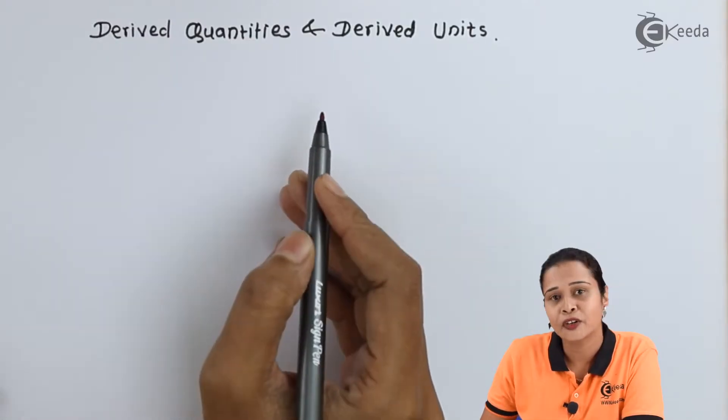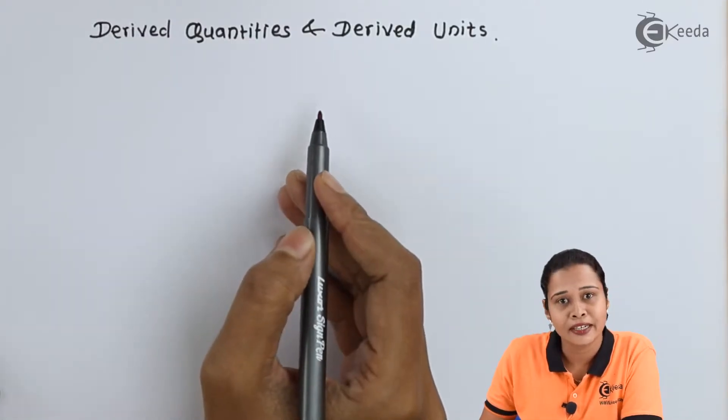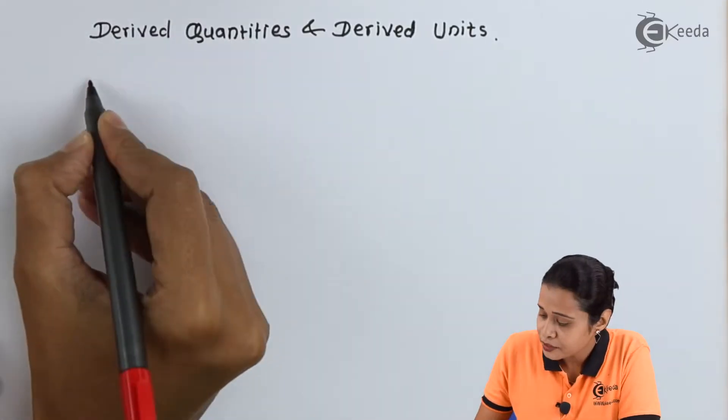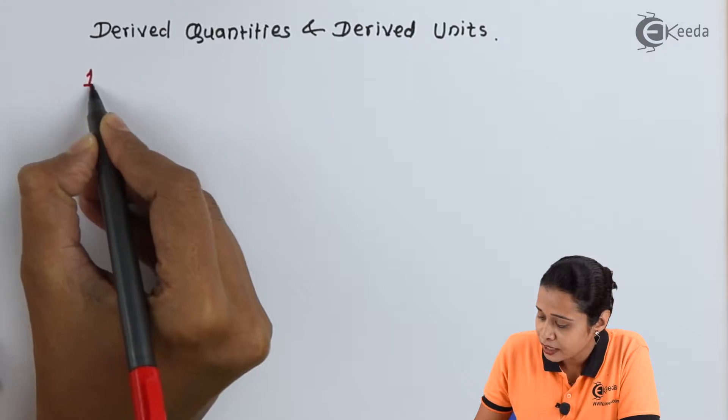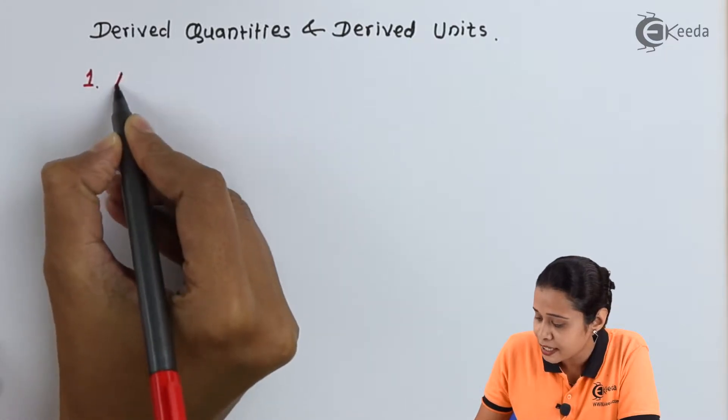Let us start with derived quantity and its unit. The first one we can take is area.